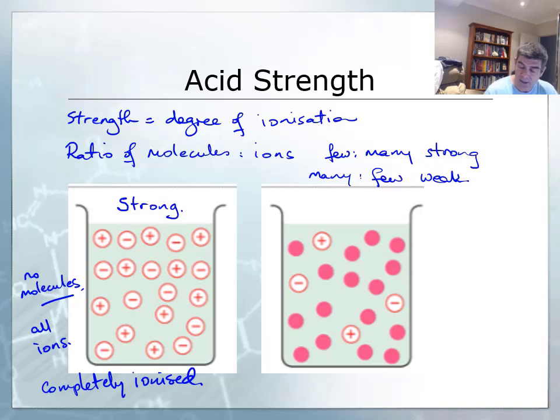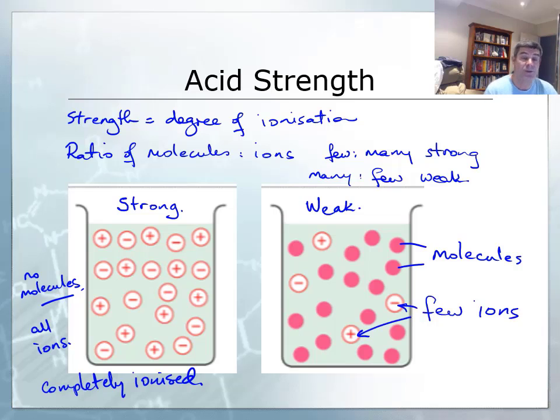On the other hand, we have a weak solution here. You can see there are lots of molecules. These molecules have not ionized, and we have only a few ions. Where we have many molecules and not many ions, the ratio of molecules to ions is high.